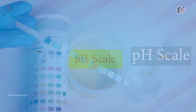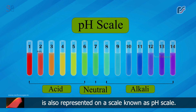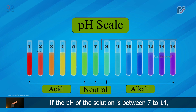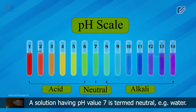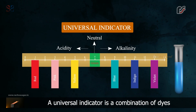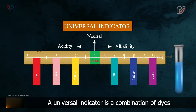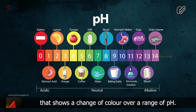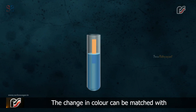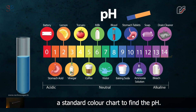The strength of an acid or an alkali is also represented on a scale known as the pH scale. The pH scale varies from 1 to 14. If the pH of a solution is between 7 and 14, it is a basic solution. A solution having pH value 7 is termed neutral — example: water. Acid substances have a pH value less than 7. A universal indicator is a combination of dyes that shows a change of color over a range of pH and is also available as strips of paper. The change in color can be matched with a standard color chart to find the pH.